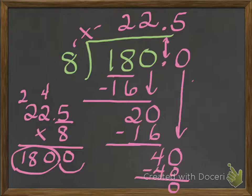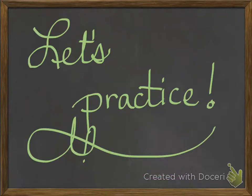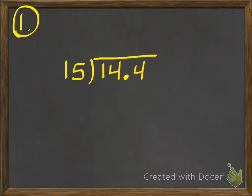So this isn't too hard if you just remember that instead of writing an R for a remainder, you're going to put a decimal point. Let's practice. Number one: we have 15.4 divided by 15. Remember, the first thing we're going to do is put our decimal point up here.